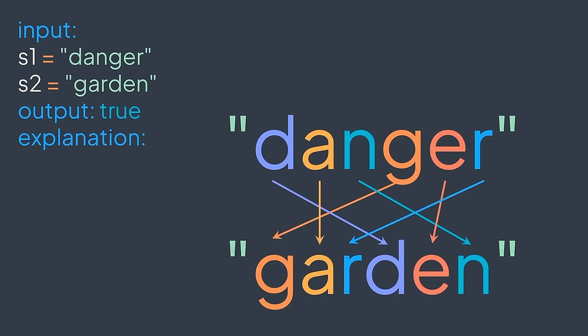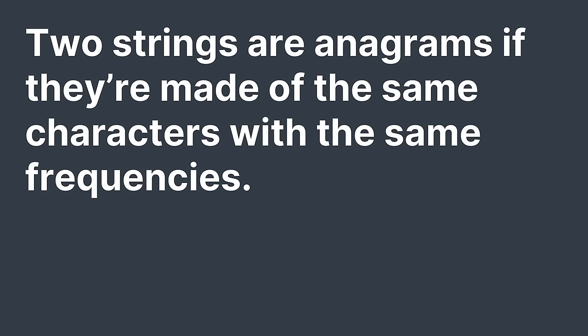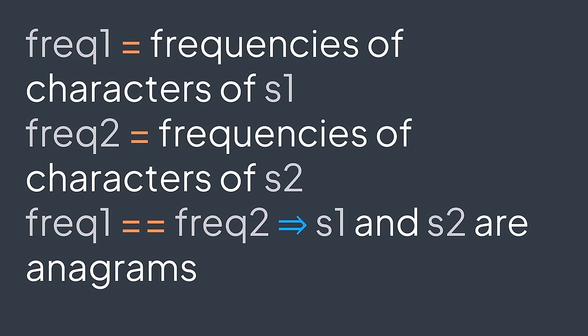For example, with the strings 'dendron' and 'garden', we take one of them, rearrange its characters, and we get the other one. To solve this problem, we know that two strings are anagrams if they have the same characters with the same frequency. So what we can do is calculate the frequency of each character in s1, calculate the frequency of each character in s2, and compare the results.